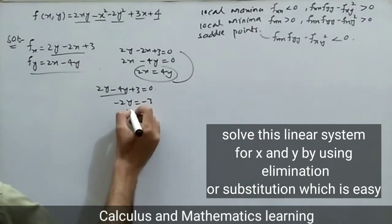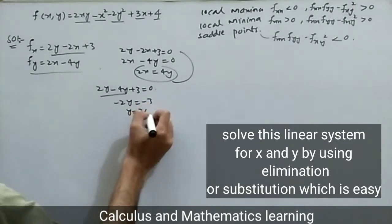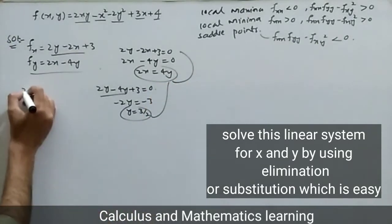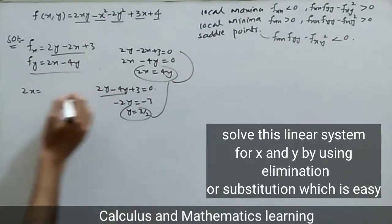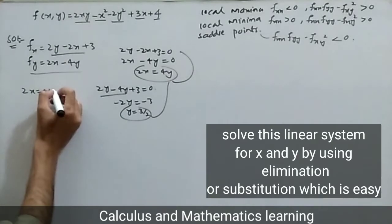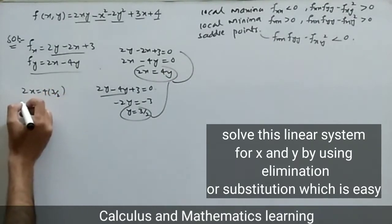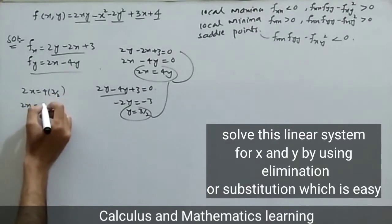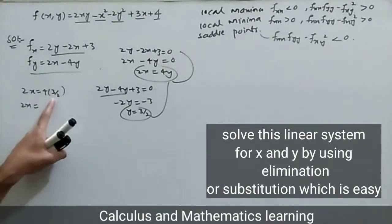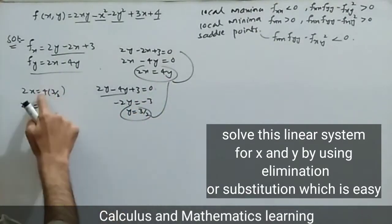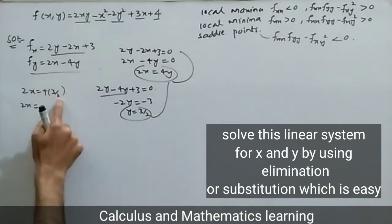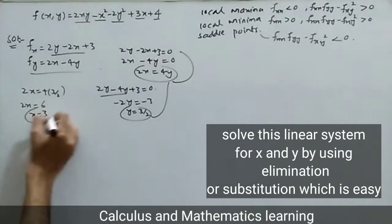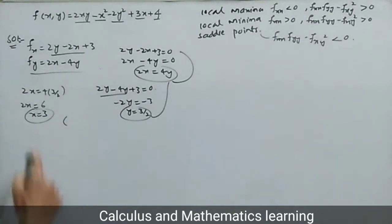Substituting 2x = 4y into fx = 0: 2y minus 4y plus 3 equals zero, so minus 2y equals minus 3, giving y equals 3/2. Then from 2x = 4y, we get 2x = 4 times 3/2 = 6, so x equals 3. The critical point is x = 3, y = 3/2.